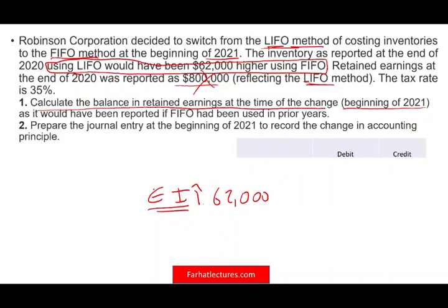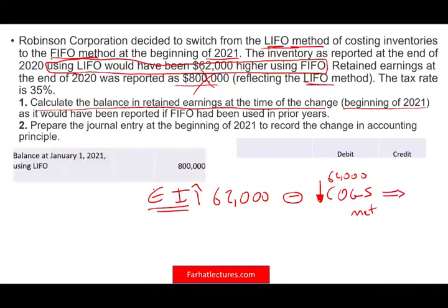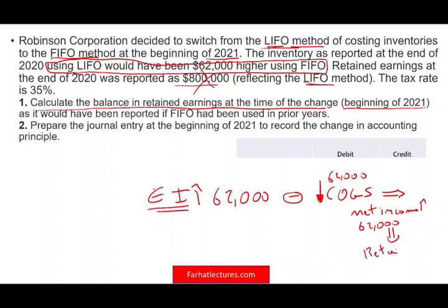First, you have to understand the relationship between ending inventory and cost of goods sold. Your ending inventory went up. As a result, there is an inverse relationship — your cost of goods sold will go down. If your cost of goods sold goes down by $62,000, what does that mean for net income? It means net income would have gone up by $62,000. And if your net income is up, your retained earnings will also be up by $62,000. You need to understand this basic concept from financial accounting: ending inventory and cost of goods sold are inversely related.